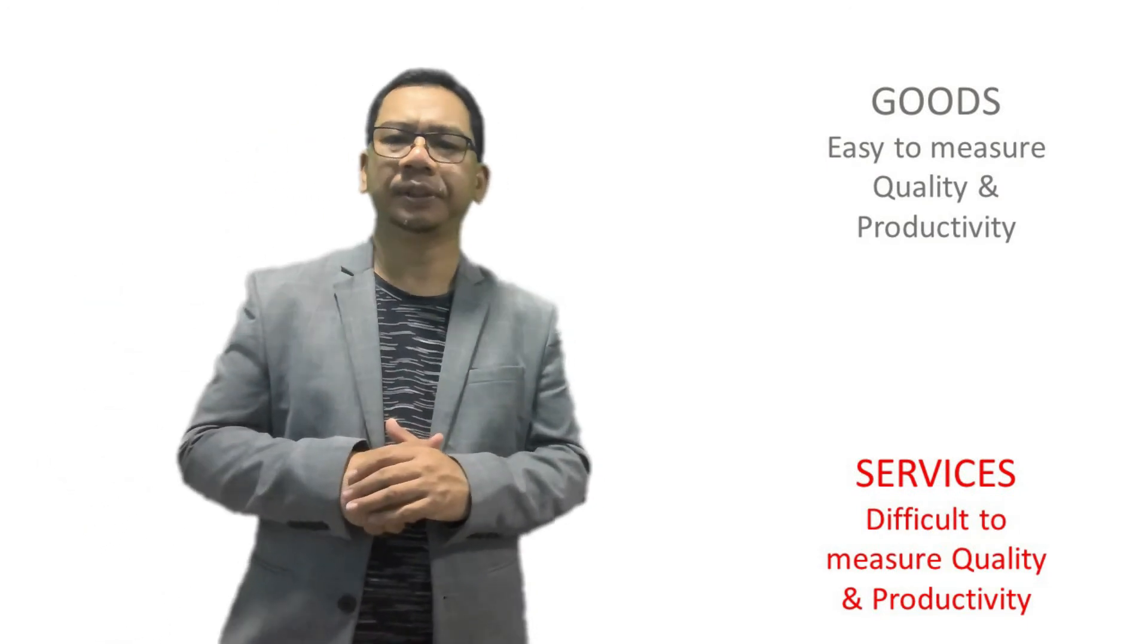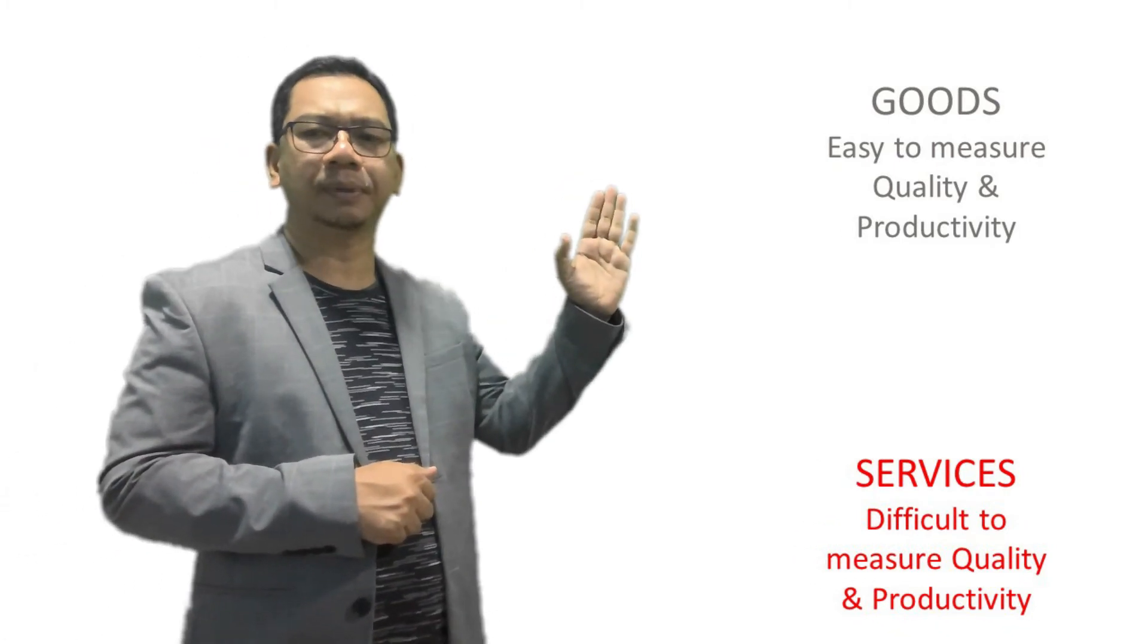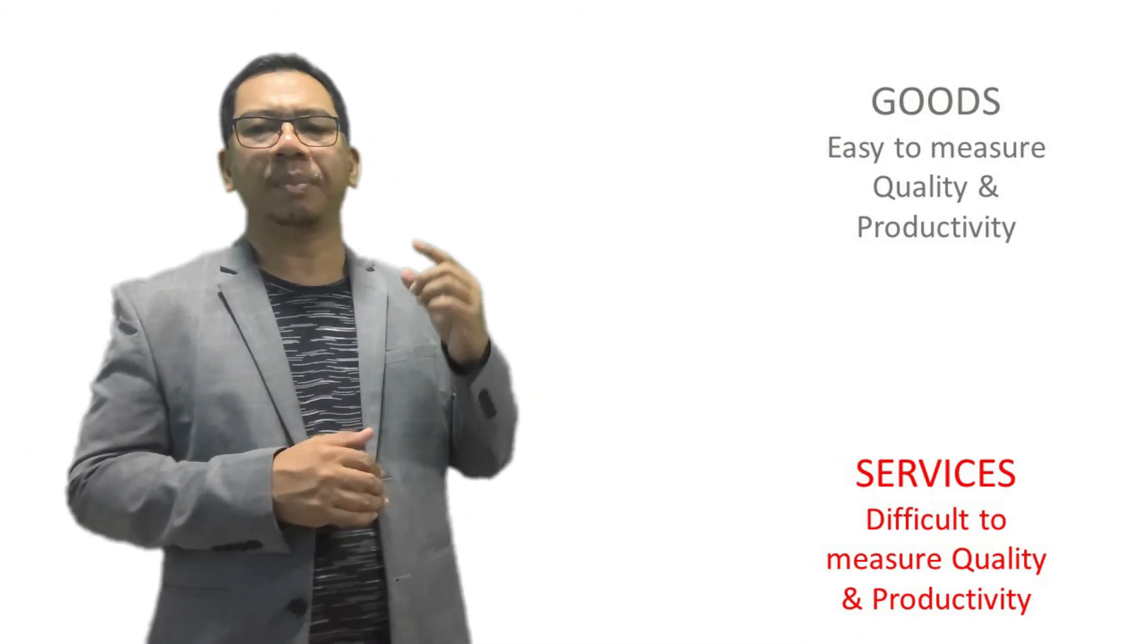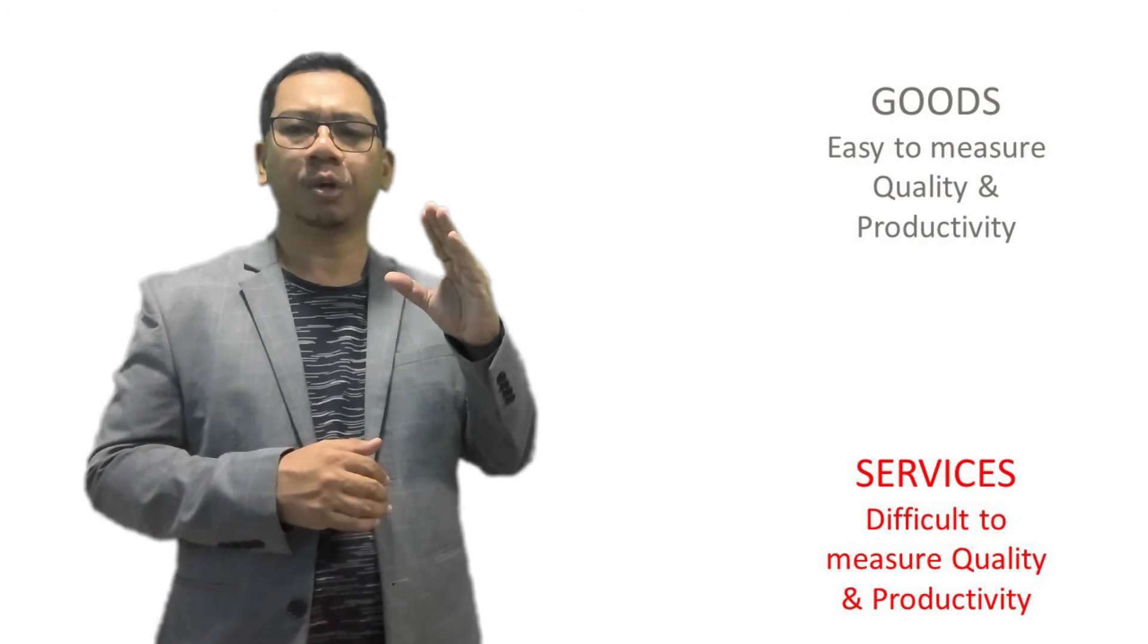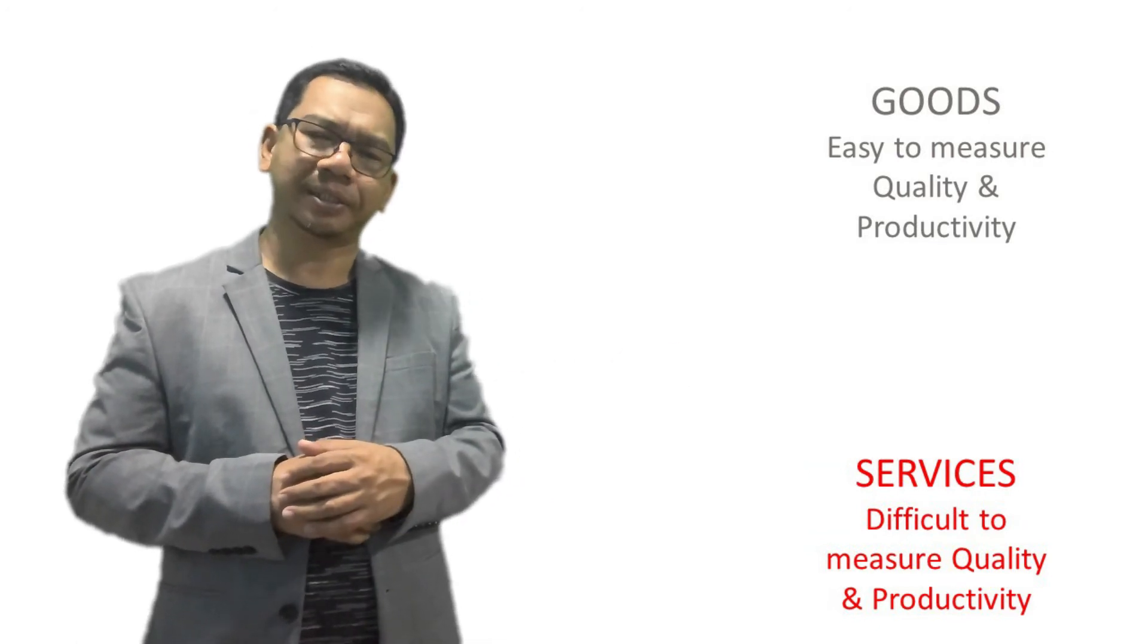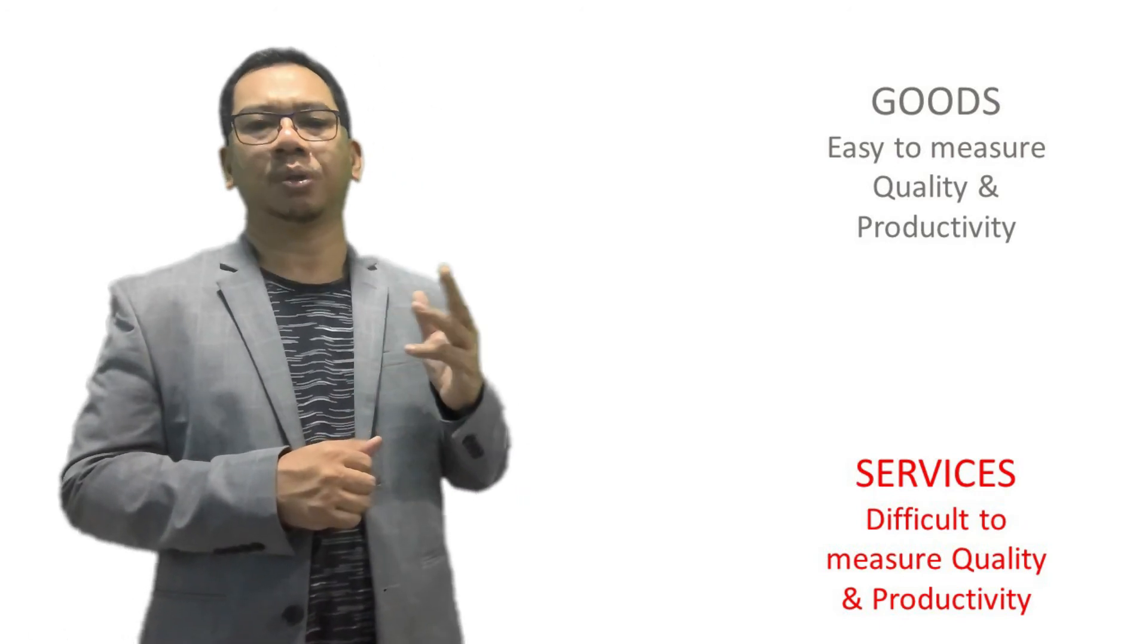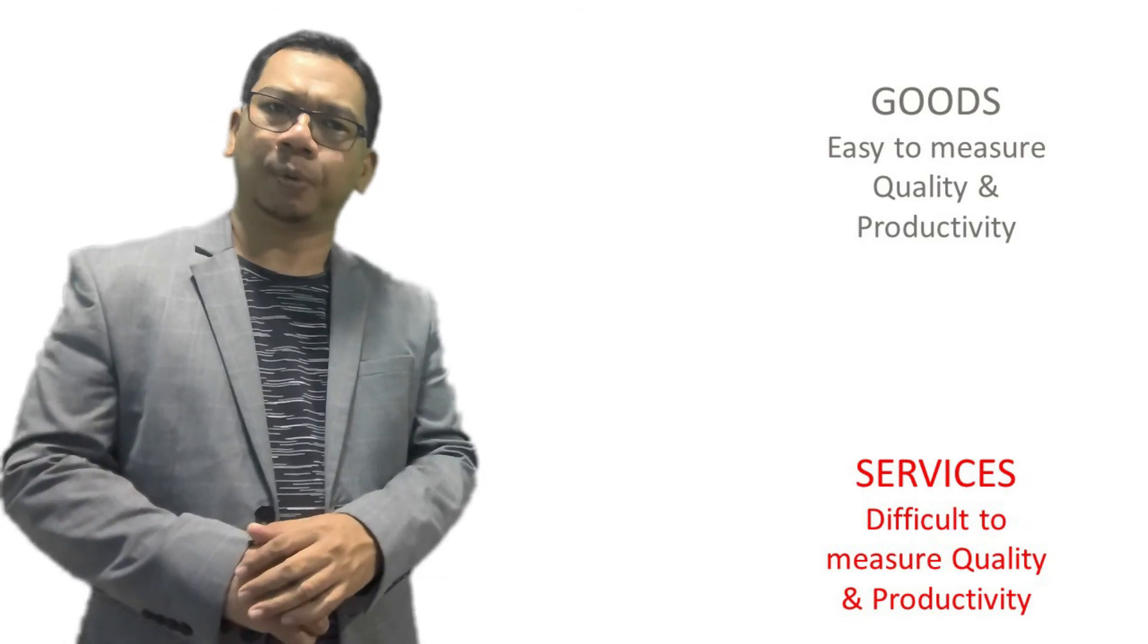Third is the issue of quality and productivity. For goods, easy for us to measure quality. Why? It is because of standardization. Let's say we take one dimension to compare, size for example. When we compare the actual size of the product, we compare with engineering specification, for example, the product definition of quality. If there is a discrepancy, then we can claim that there is no quality because the actual one do not follow the specification.